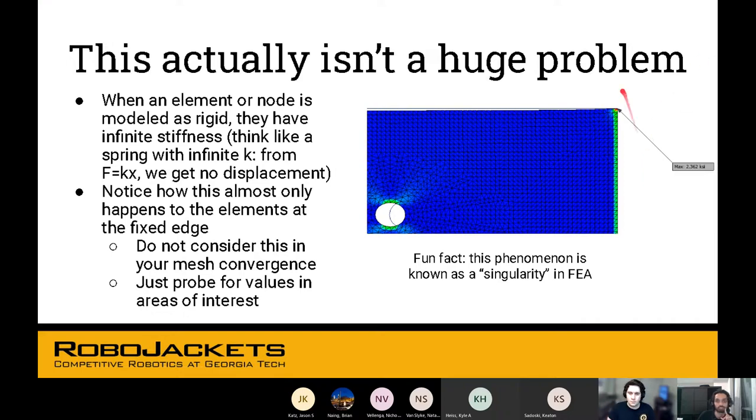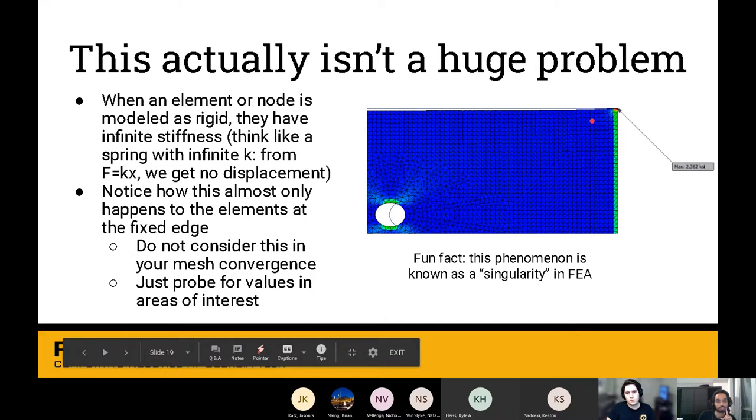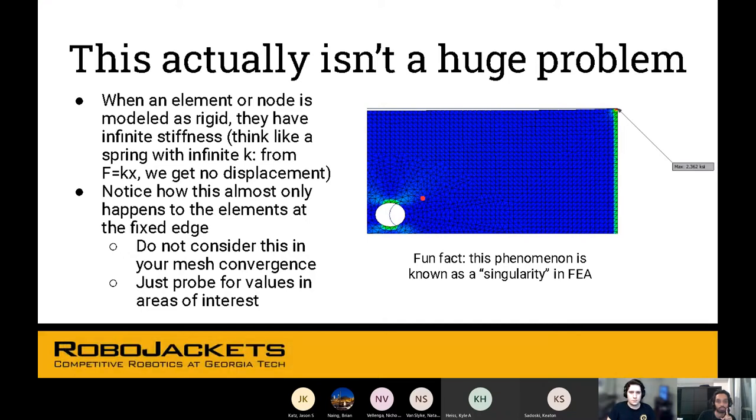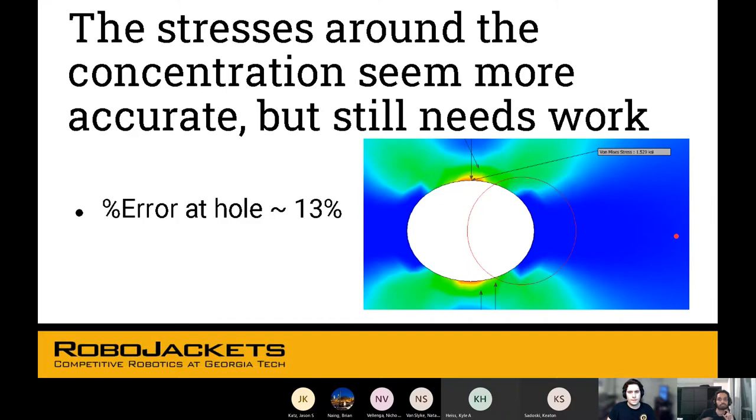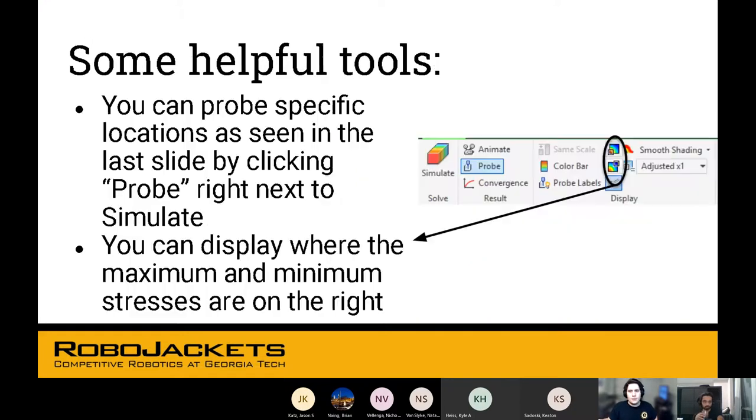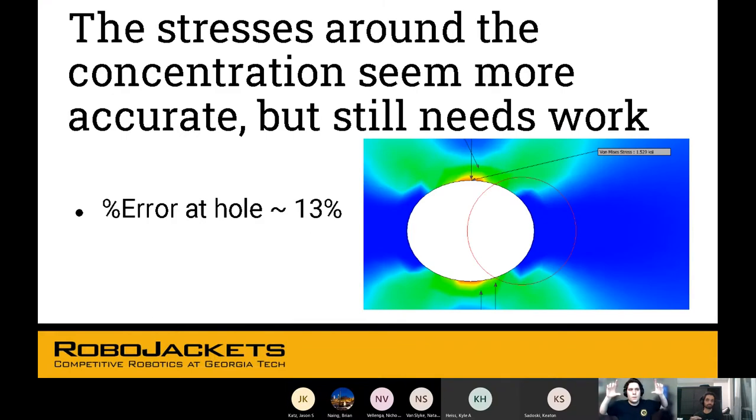This is only happening at the fixed edge. We do not need to consider this if it's not that important. You just need to worry about what's happening at the hole, which is what we're concerned about. Near the hole, the stresses around the concentration seem accurate, but it needs a bit more work. The error at the hole is around 13%. The rule of thumb is it should be near 5%. This is a different error. When you're refining the mesh, your results from before, the max stress you find in one particular area, you take that and once you refine it, if that value changes by less than 5%, then you know your mesh has converged. It's not necessarily that the error with respect to the real thing is within 5%.